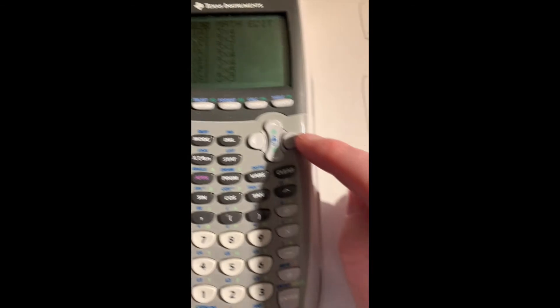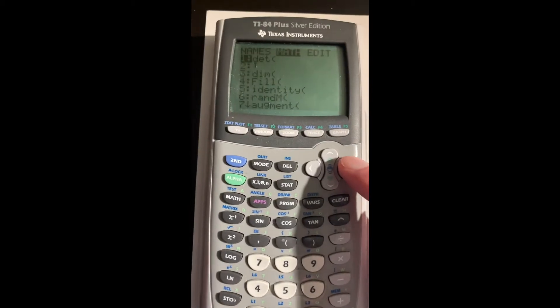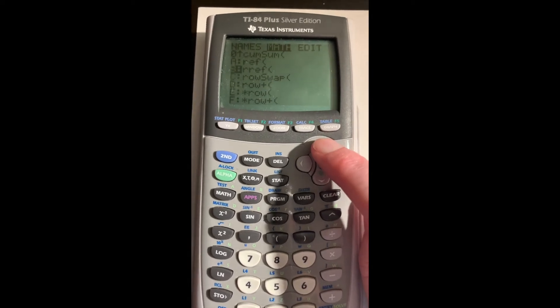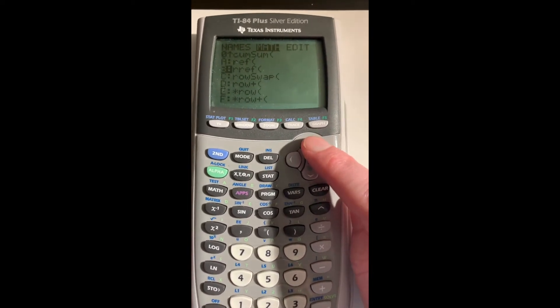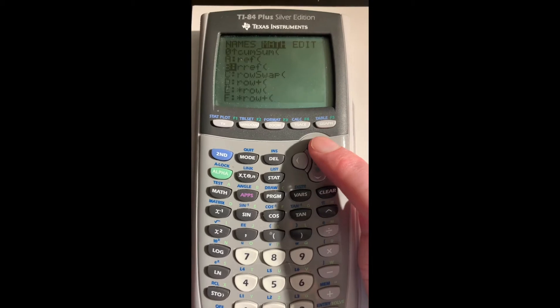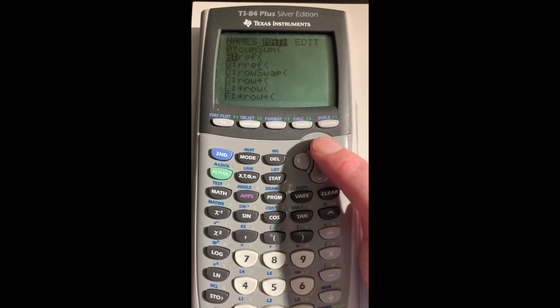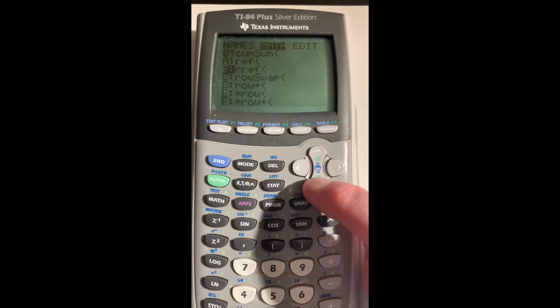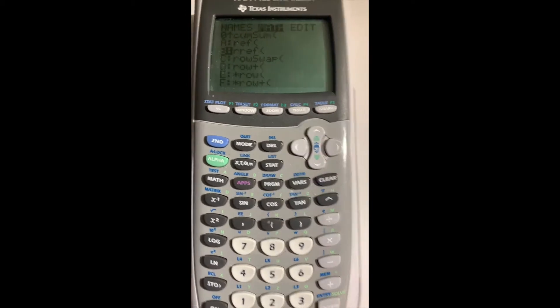Now we go to the math menu. Hit the right arrow to the math menu and you can scroll down, but it's quicker to scroll up. I'm a lazy mathematician, so I'm going up to this function, RREF. Be careful that you don't do REF. We want RREF, which is reduced row echelon form. Press enter.